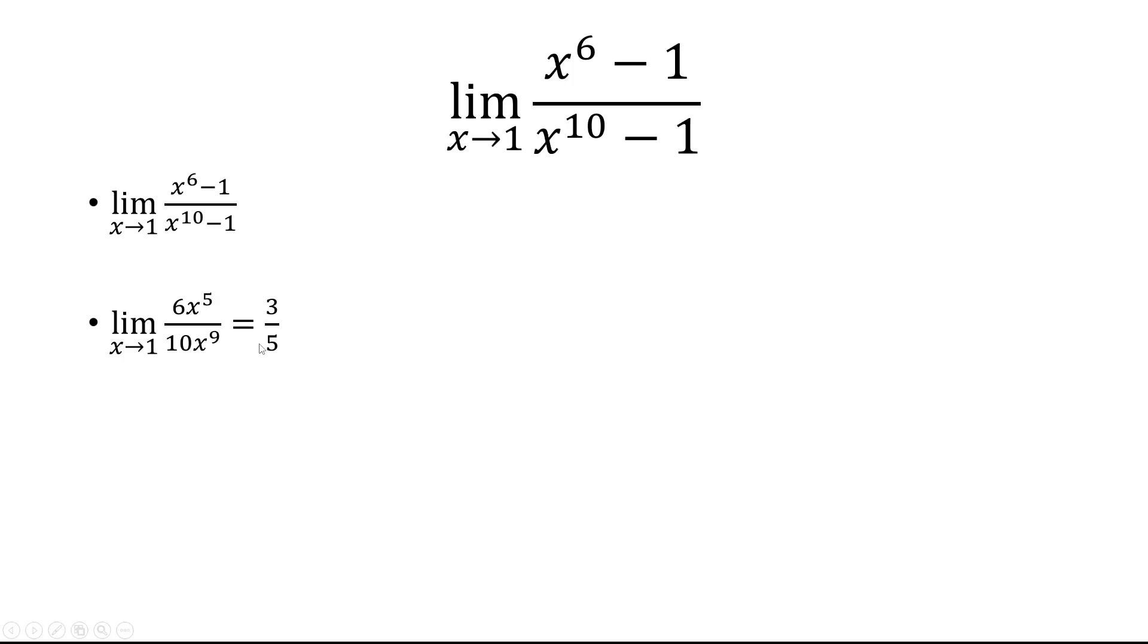Now let's solve this limit using algebra. And that's going to involve us factoring. So let's factor x to the 6th minus 1 into x cubed minus 1 times x cubed plus 1. In the denominator, we have x to the 5th minus 1 times x to the 5th plus 1.